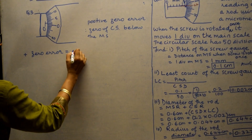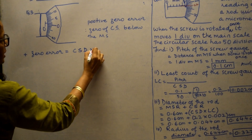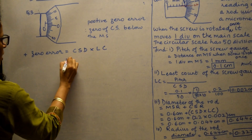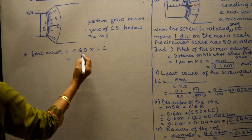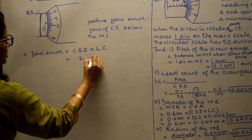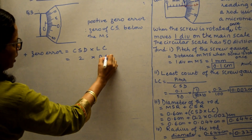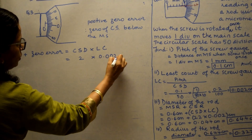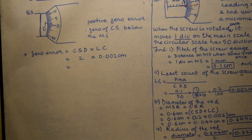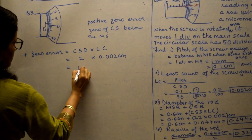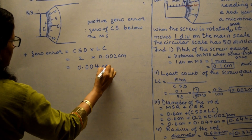The positive zero error equals the circular scale division multiplied by the least count. The second division is coinciding, so: 2 × 0.002 = 0.004 centimeter. The positive zero error is 0.004 centimeter.